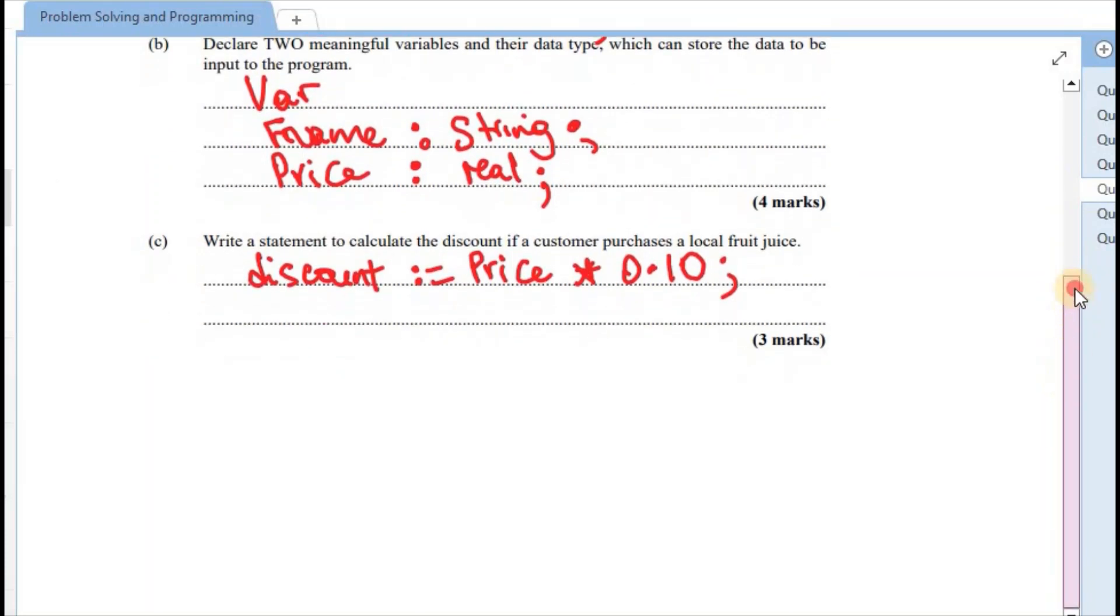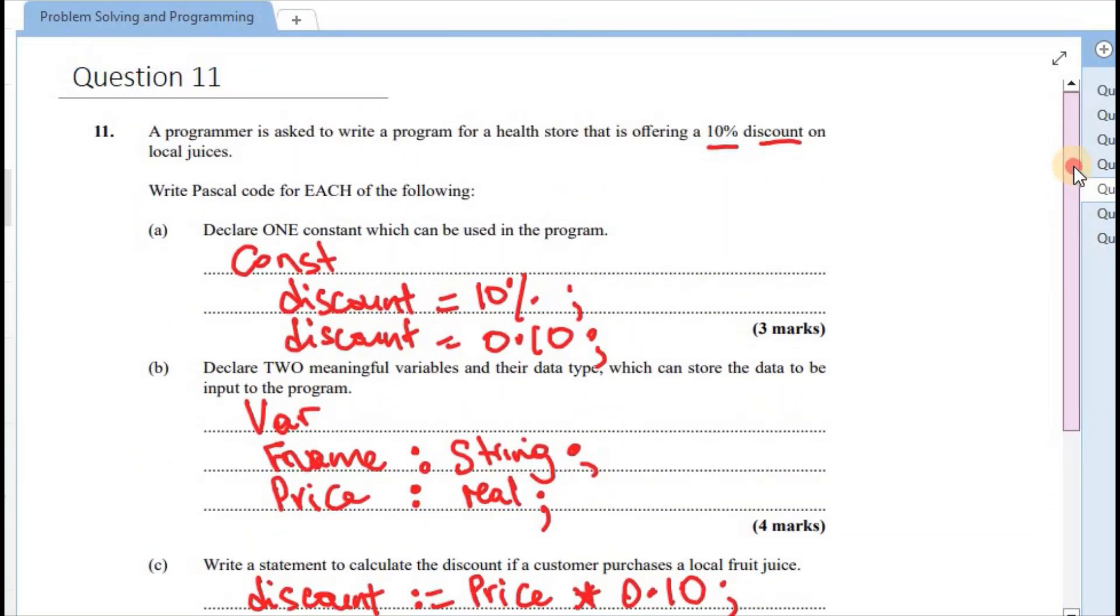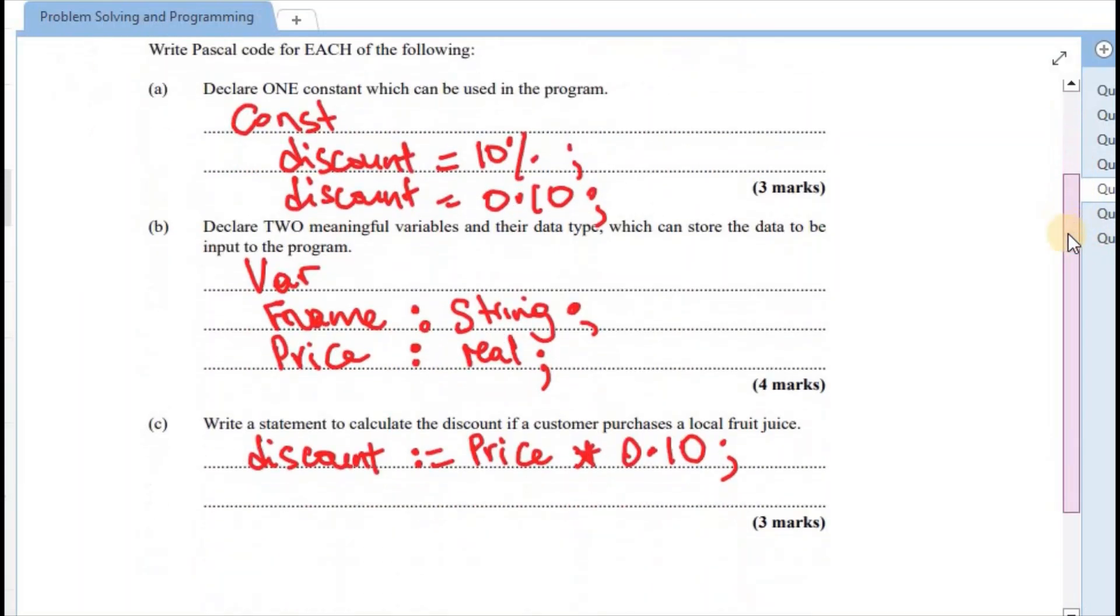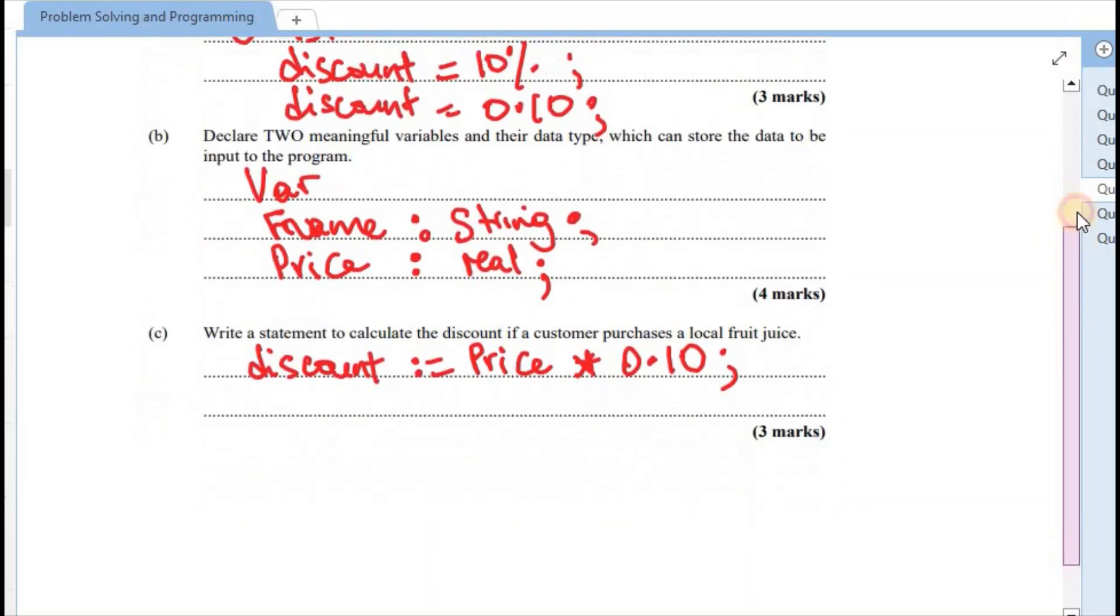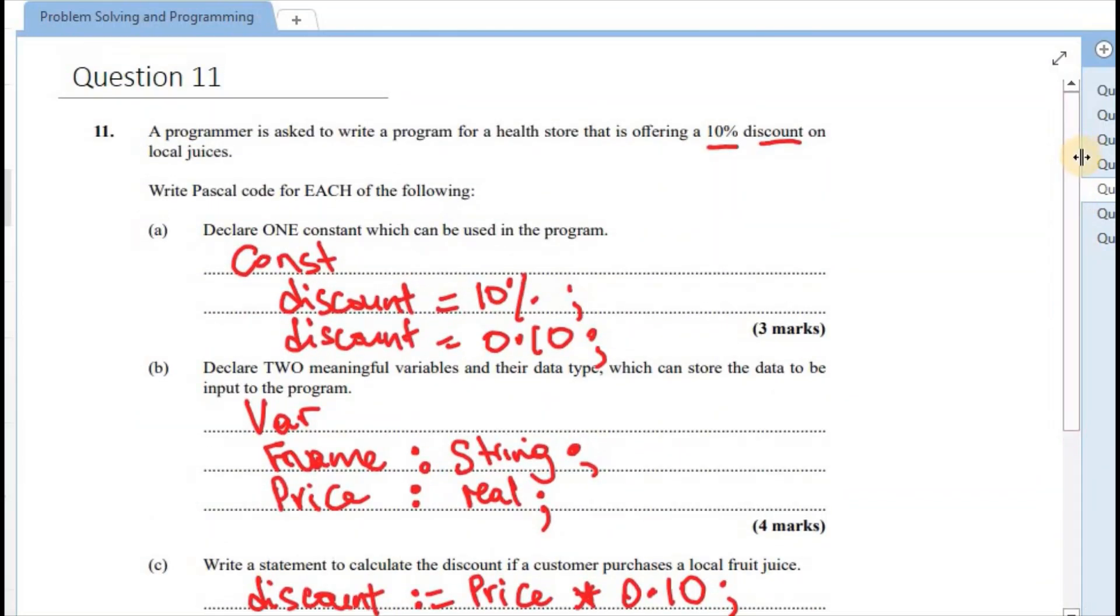All right. That would provide us with a total of three marks. All right. So this would have wrapped up our 2019 January Paper 2, focusing on problem solving and programming. I do hope that you would have learned something new. And for those who are just recapping, I do hope that this would have provided some more clarification to what you would have already garnered.